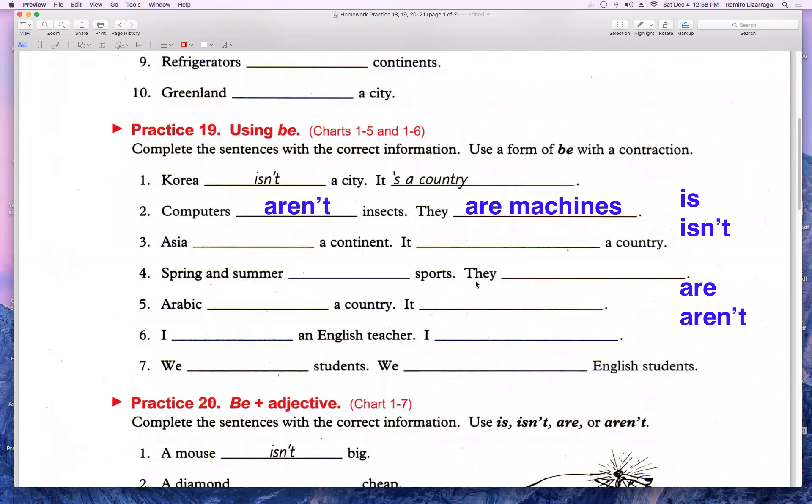Acá también voy a tener que decir lo mismo. Por ejemplo, ¿qué son spring y summer? Mira acá. En la cuatro. ¿Qué son spring y summer? ¿Qué son estas palabras? Spring y summer, ¿qué son? ¿Alguien sabe? ¿Se acuerdan? De esta palabra. Eso lo vimos. Spring, summer, winter, fall. Son estaciones, ¿verdad? Pero ¿cómo se dice estaciones del año en inglés?